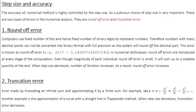Before understanding the exact relationship between step size and accuracy, let's first learn what are the different types of errors commonly encountered in numerical techniques. There are nearly two types of errors: one is the round-off error and the other one is the truncation error.